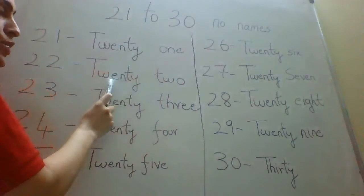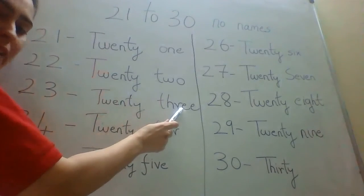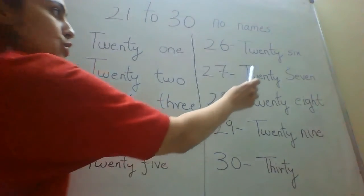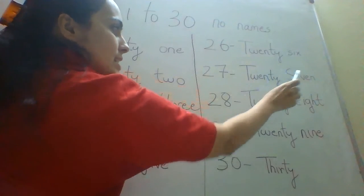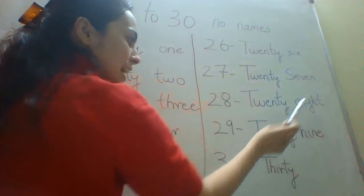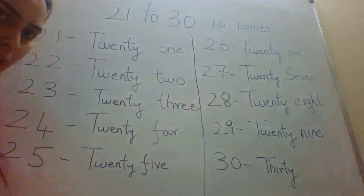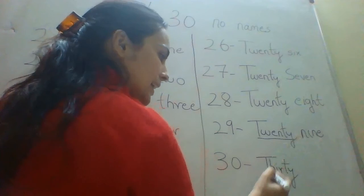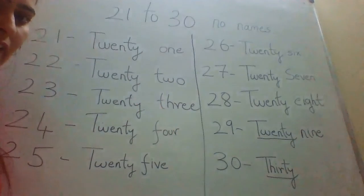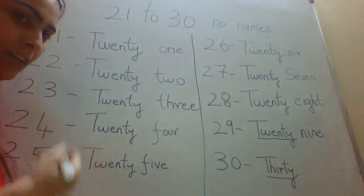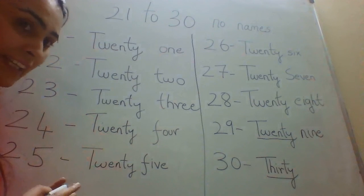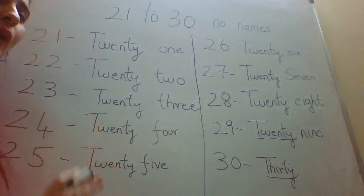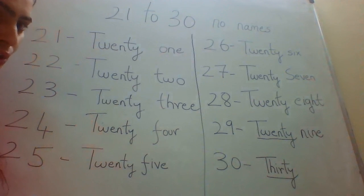So 21, 22, 23, 24, 25, 26, 27, 28, 29, 30. The main spellings you have to learn are 20 and 30. The rest — 1 to 9 — you already know. So I want you to write the spellings of 21 to 30 in your maths notebook.